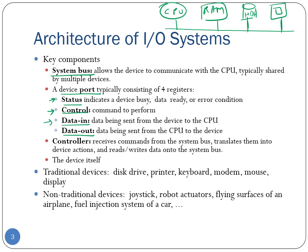The data-in register contains any data that needs to be sent from the I/O device to the CPU. The data-out register contains any data we want to send from the CPU into the device — so if the CPU wants to write some data into the device, that will be written into the data-out register. Here is a simple example to illustrate the working of these four registers.